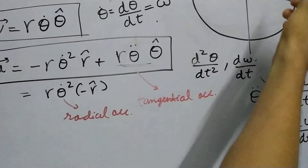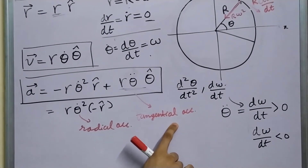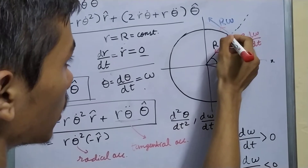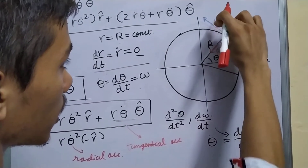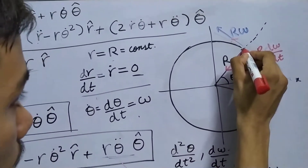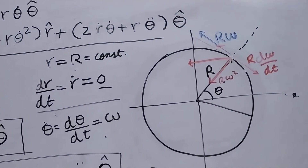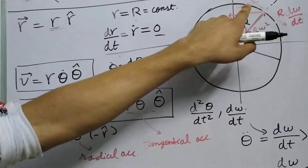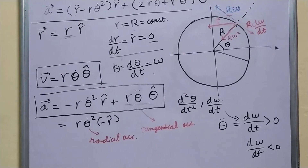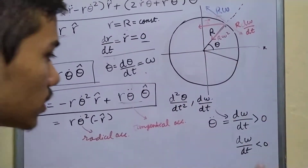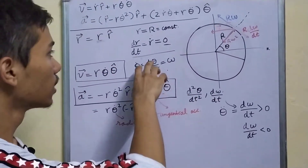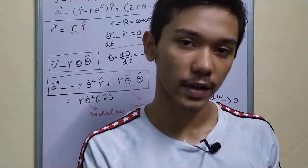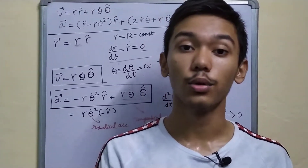The net acceleration is the sum of these two — the radial part and the tangential part. If this is your tangential acceleration vector, the net acceleration would be this vector plus this vector. You shift this vector and you get the resultant — this vector is your net acceleration. This is the general case with only one constraint: the particle is moving in a circle, so r-dot is zero.